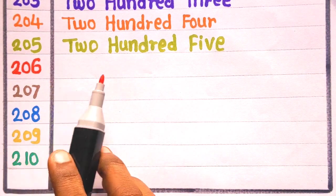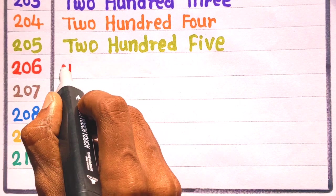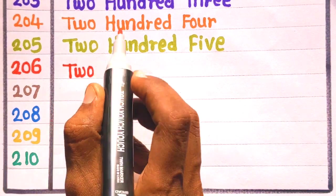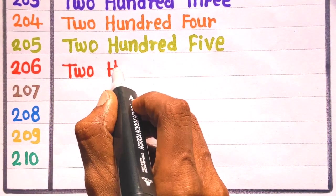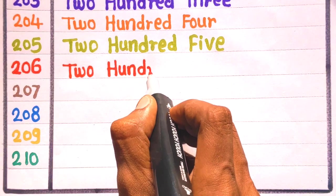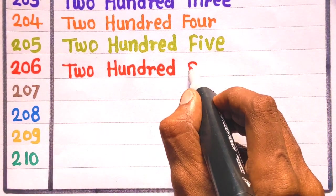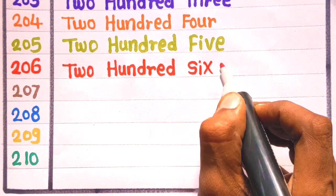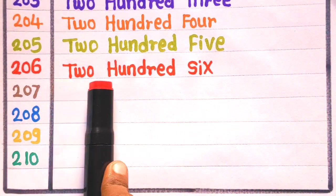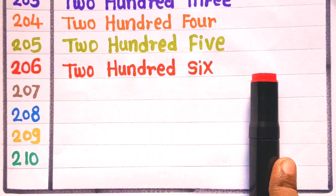Next is 206. T, W, O, 2, H, U, N, D, R, E, D, 100, S, I, X, 6, 206. With the red color.